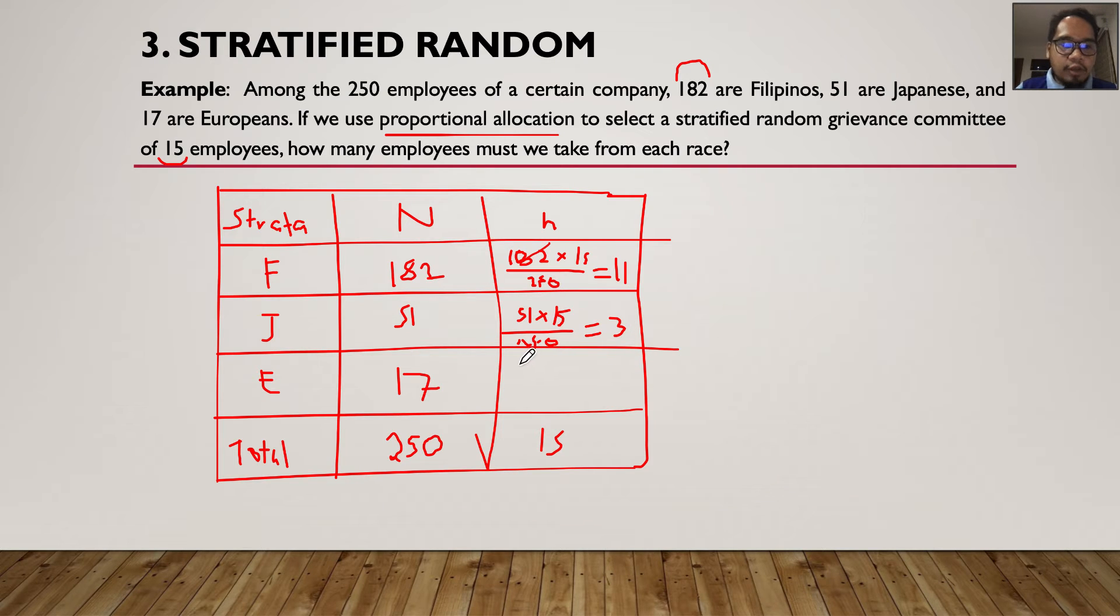And then lastly for the Europeans, we have 17. I think you can see that this will be 1 because 11 plus 3 is 14. So meaning there should be 1 European to make it 15. But seldom there are errors that occur. So we want to make sure. So that's 250, sorry for my penmanship. So that's 17 times 15 divided by 250. So that's 1.02. Or we can just round it off to 1. All right.